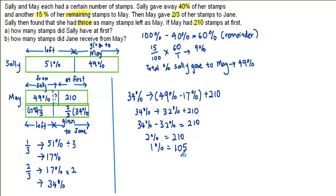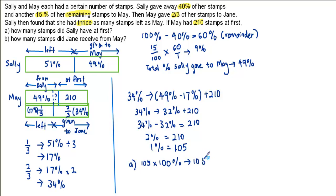We can now find the number of stems that Sally had at first, which would be 100%. So for part A, how many stems did Sally have at first? It is actually 105 times 100%, and this gives us 10,500 stems.